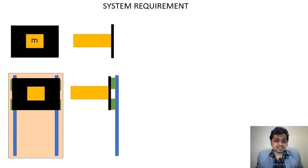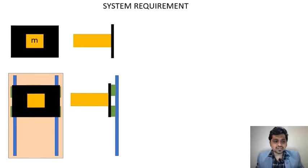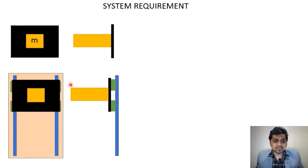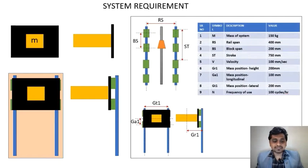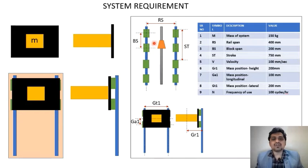This is our system — here is the mass and here is the plate. We want to move this total system up and down; that is our vertical application. We have mounted this total assembly on the LM block and rail. The LM blocks and LM rails are driven by a ball screw in the middle section. We are focusing only on the LM rail selection.